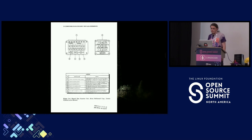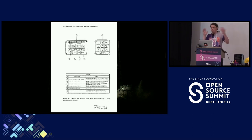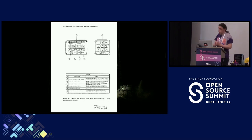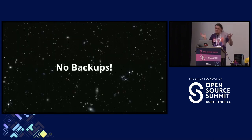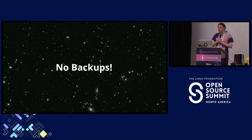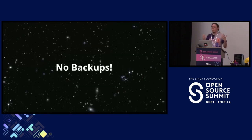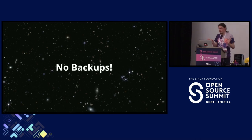The control interfaces used in Gemini consisted of switches to control the operation of the computer, a velocity readout, and a keypad interface to literally access and interact with memory addresses. Generally, stuff worked pretty well, but it's worth mentioning that the computers had no computational redundancy whatsoever. They relied entirely on the software for error correction.